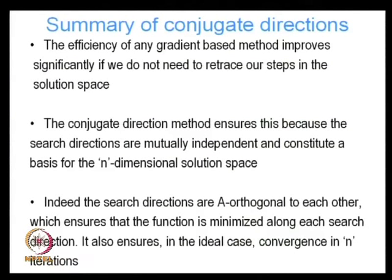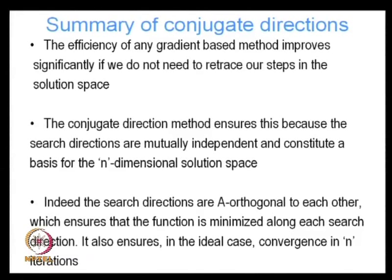What was the method of conjugate directions, and why do we need conjugate directions? We started with the postulate that the efficiency of any gradient-based method improves significantly if we do not need to retrace our steps in the solution space. That was not a feature of the steepest descent method, which is why we often had to retrace our steps. The advantage of the method of conjugate directions was that the steps we took, we do not have to take those steps again — we never retrace our steps. The conjugate direction method ensures this because the search directions are mutually independent and constitute a basis for the n-dimensional solution space.